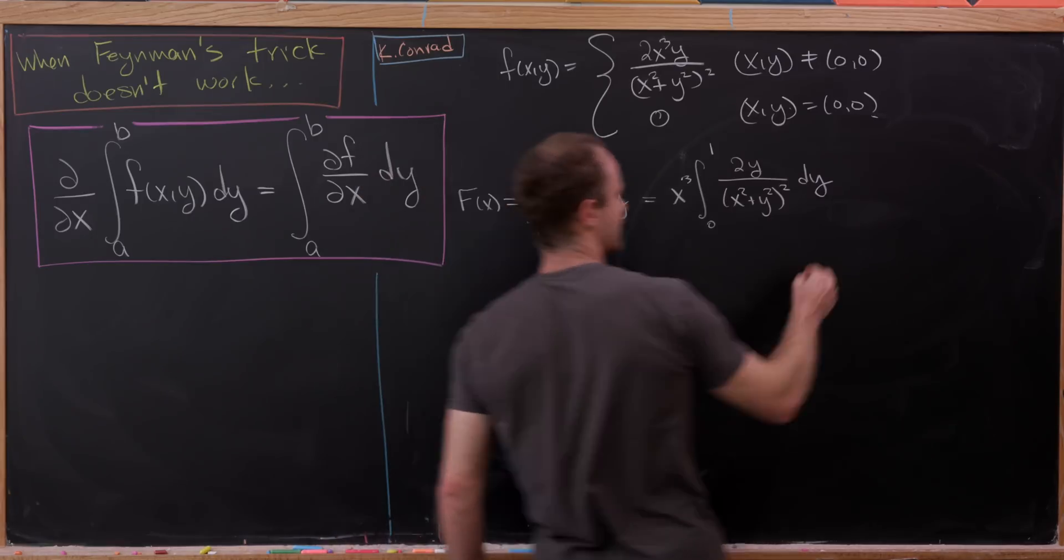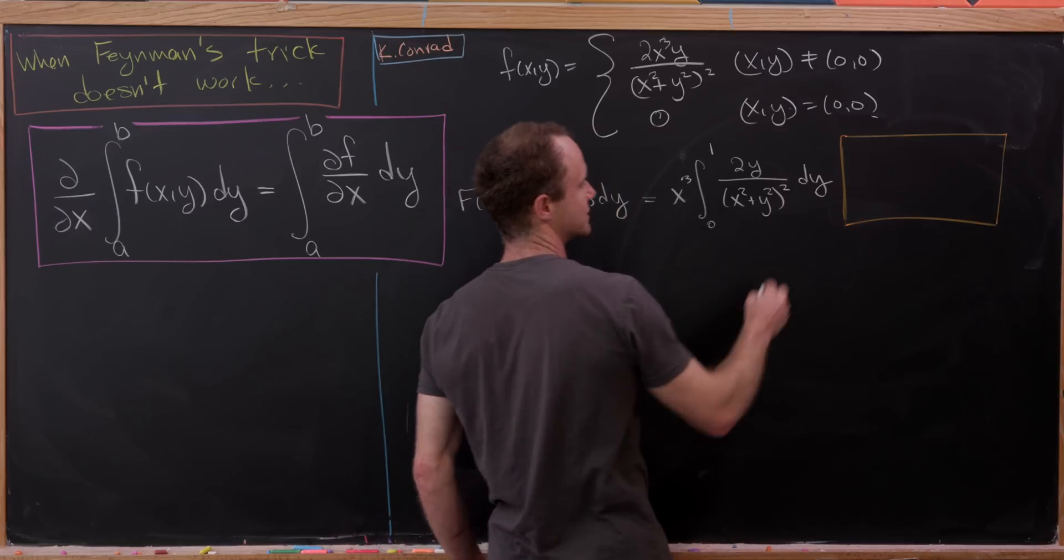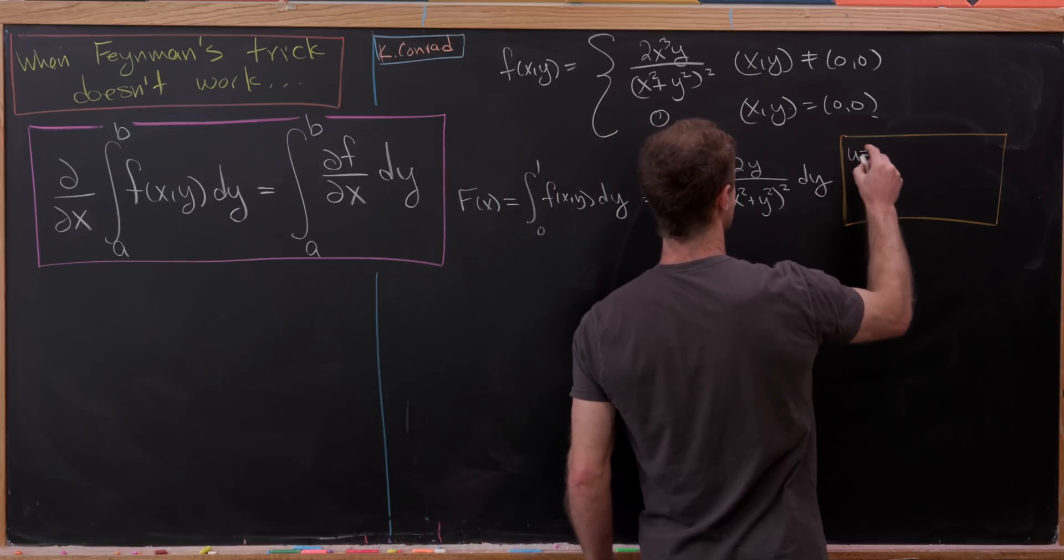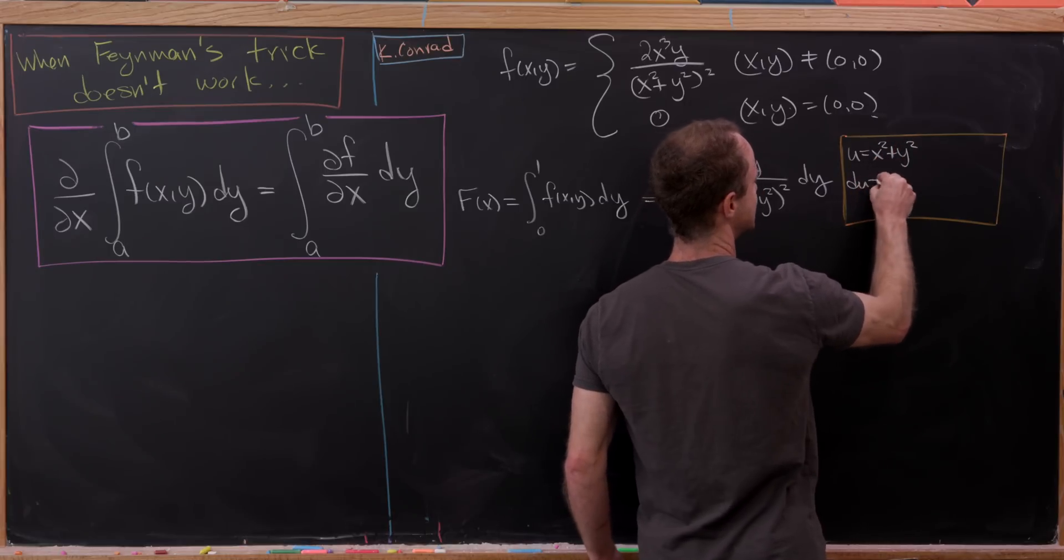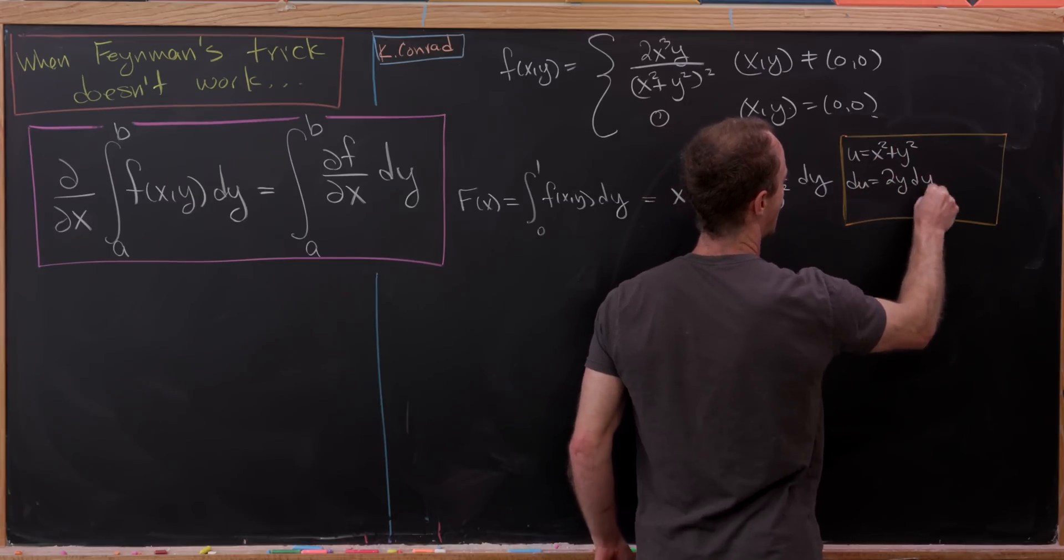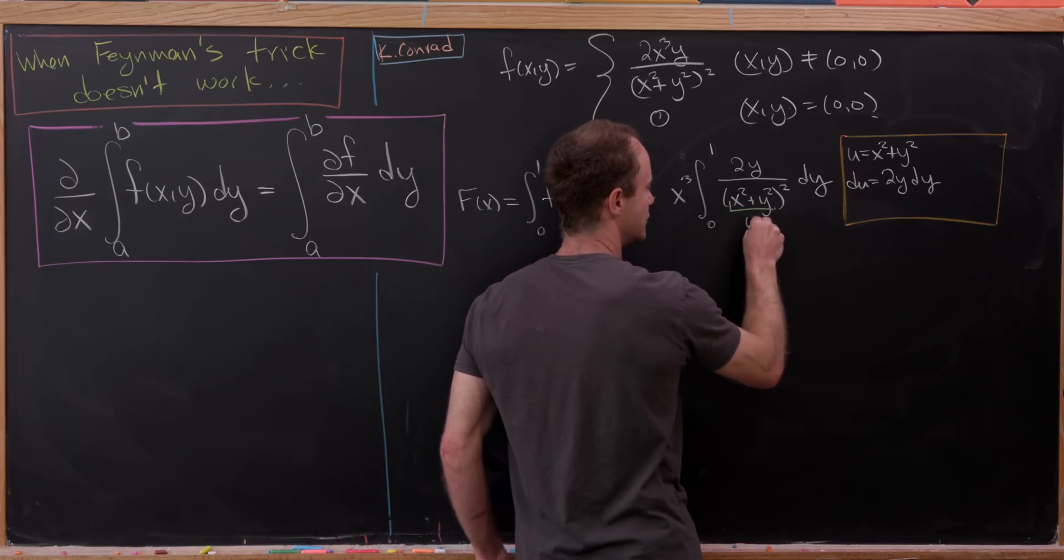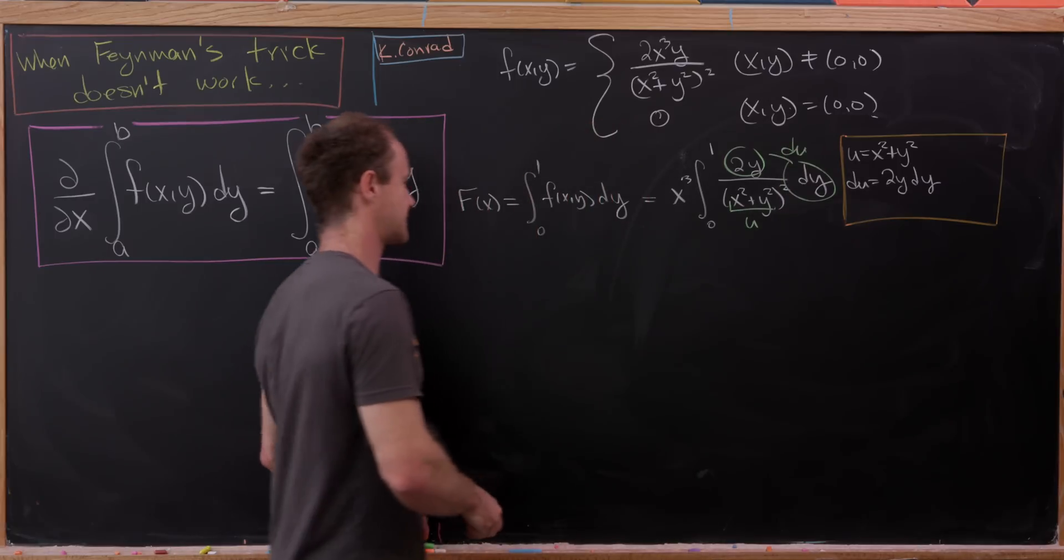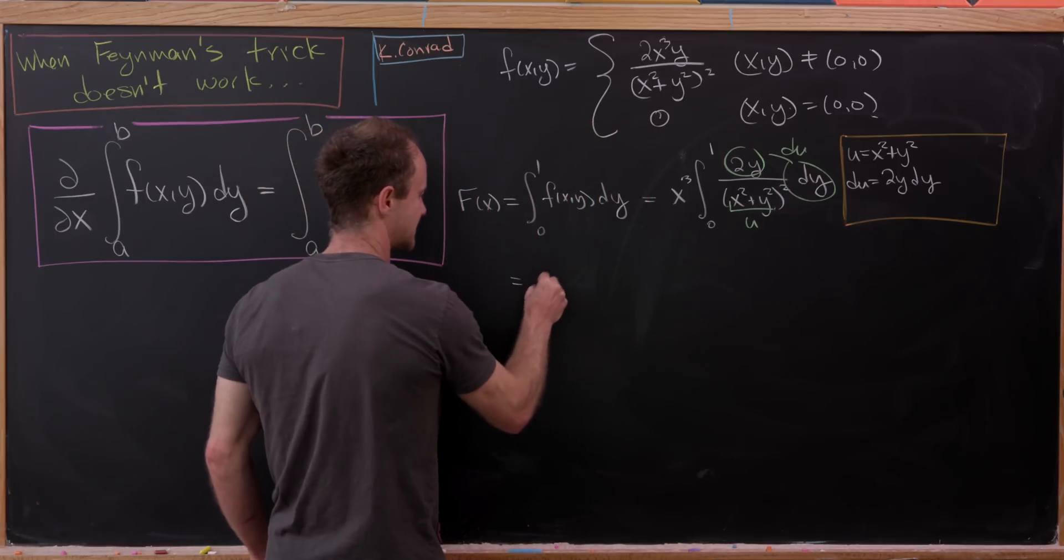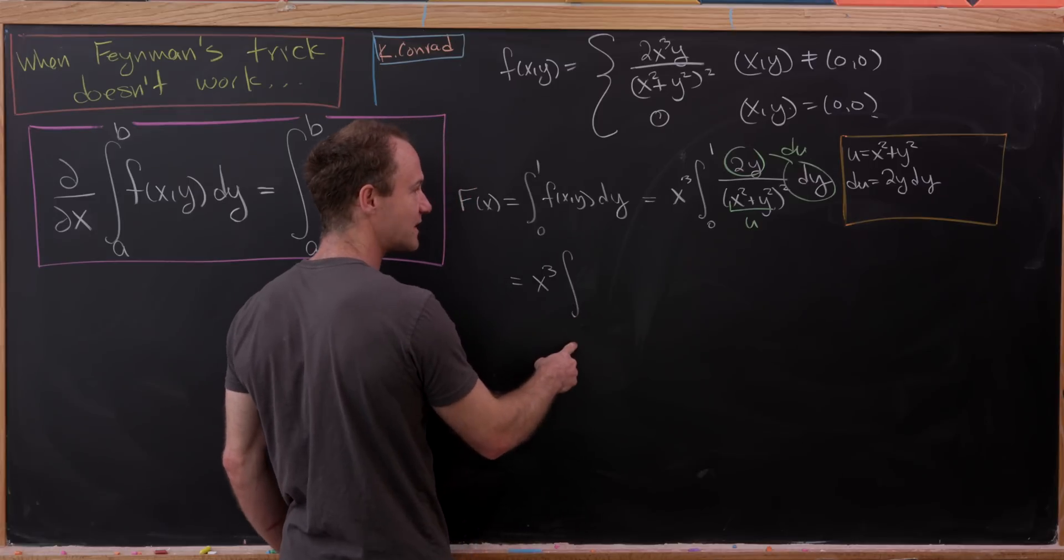Now we're going to attack this integral with a u substitution, and it's indeed a fairly simple u substitution. We'll take u to be equal to x squared plus y squared. That means du is equal to 2y dy. There's our u term, and here we have our du.